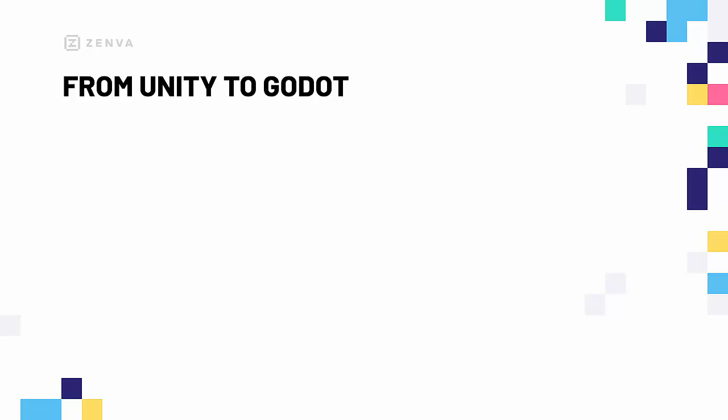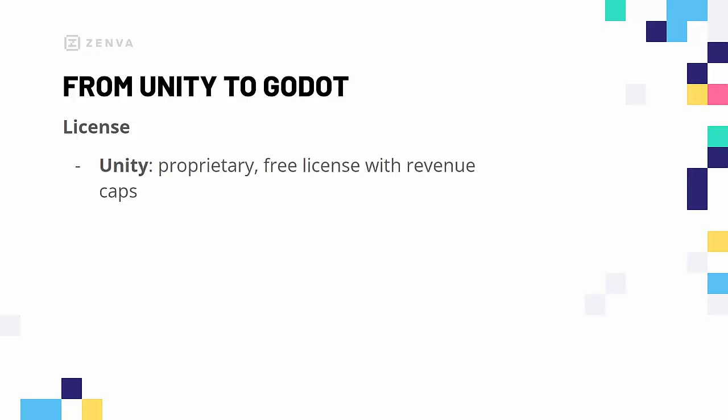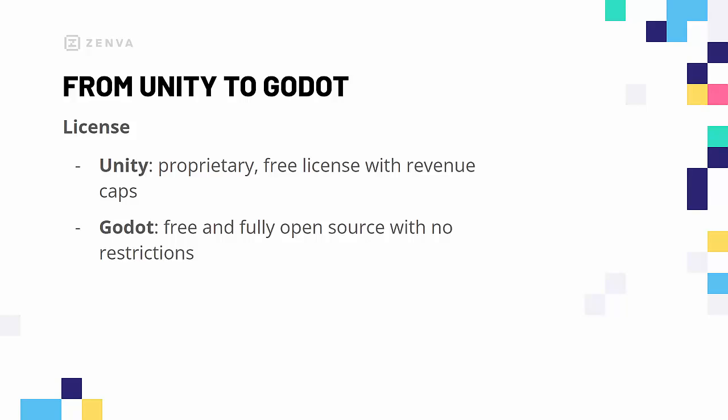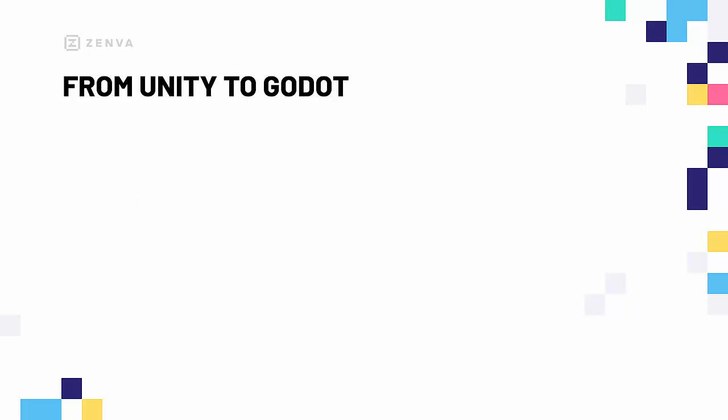The first point we will be discussing is licensing. In Unity, it is proprietary with a free license that has revenue caps — once you start earning a considerable amount of money, Unity will ask you to pay for a license. Godot, by contrast, is completely free and fully open source with no restrictions. No matter how much money you make with your game, Godot won't take a penny, and you will have complete ownership over the game you create.